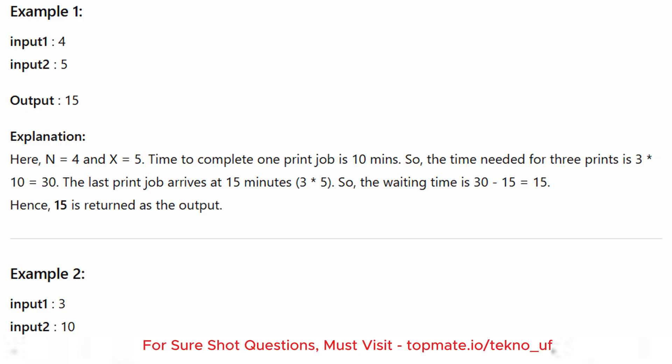For N=3, X=10: previous jobs time = (N−1) × 10 = 2 × 10 = 20 minutes. Last job arrival time = (N−1) × X = 2 × 10 = 20 minutes. Waiting time = 20 − 20 = 0. So the output is zero. If there is no waiting time, return zero.